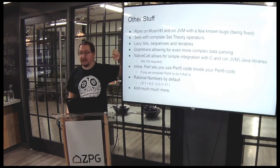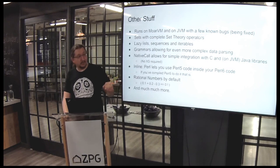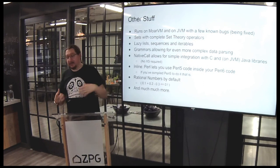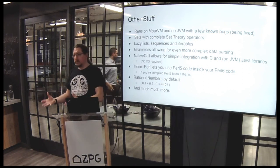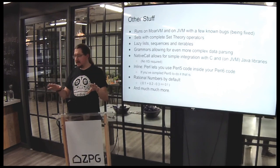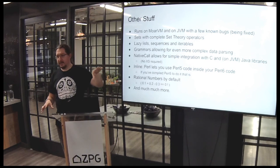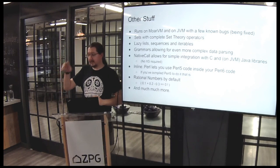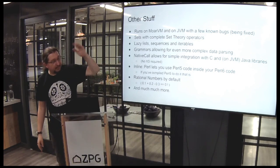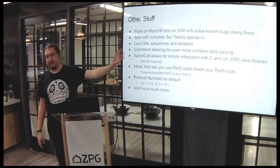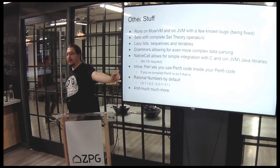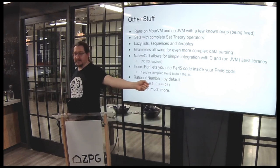Native Call is amazing — I should really have a separate slide for it. Native Call basically lets you call external libraries using straight-up Perl 6, without having to write any intermediate XS-style wrapper code. You just define your library. I was playing around with an SDL the other day and getting it running with Perl 6 and Native Call really simply. There's also Inline::Perl5 for running Perl 5 code in Perl 6, though it's not very easy to use. And rational numbers by default — 0.1 + 0.2 - 0.3 does equal 0, which most languages won't give you.